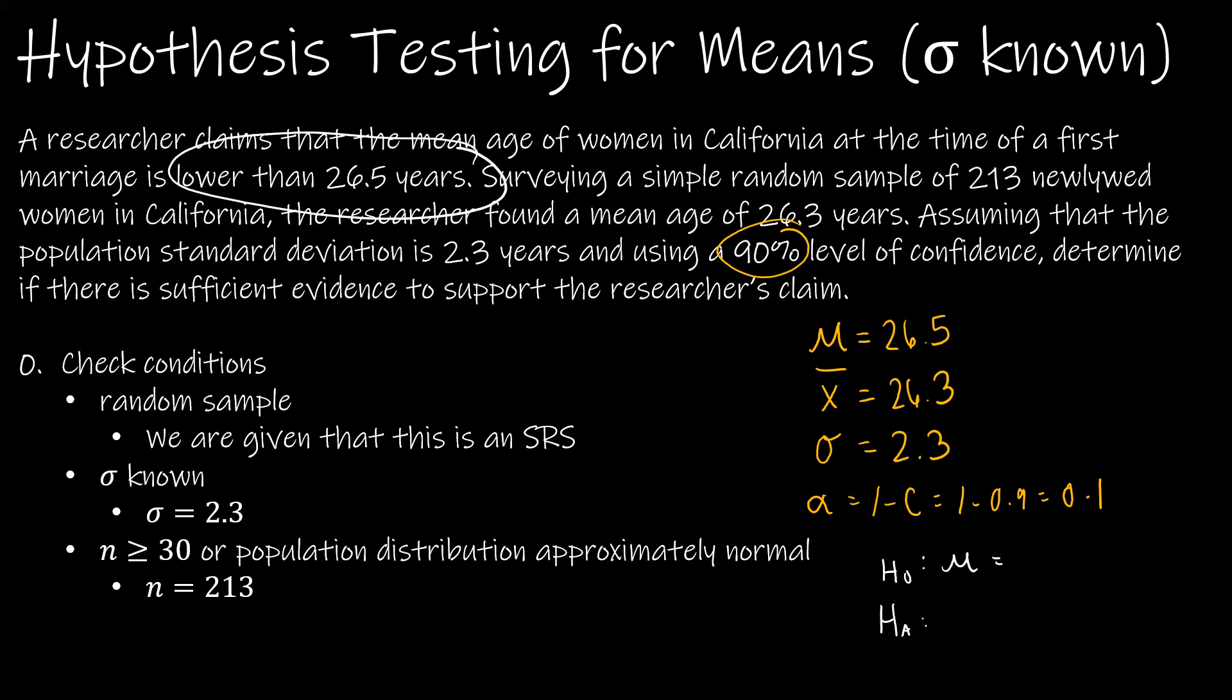The null hypothesis is going to be the 26.5 that we expect. The researcher believes it's lower. Let me get rid of the equal sign. It's lower than 26.5 years.